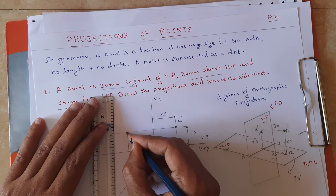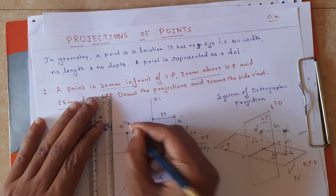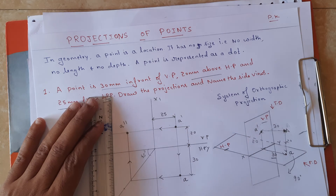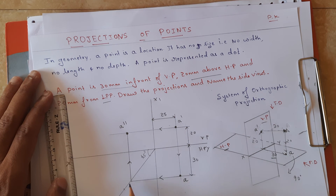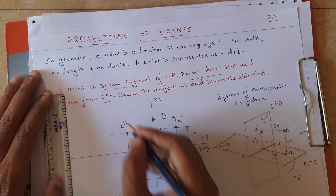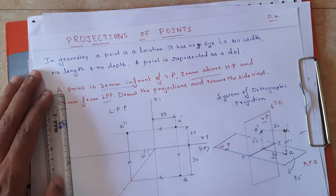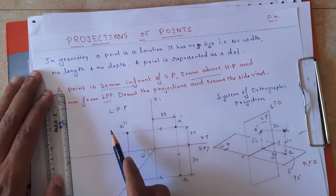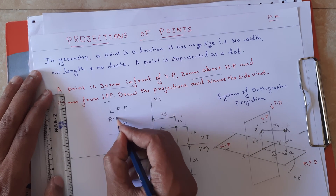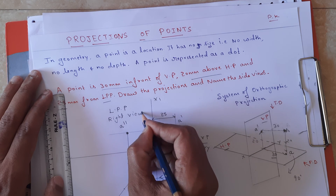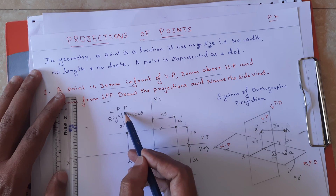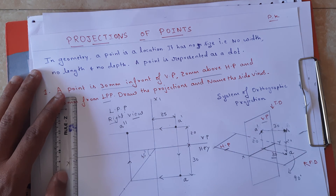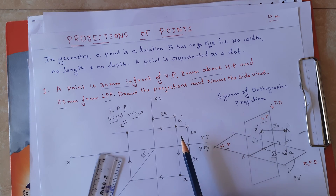So this is the side view of the point, represented as a double dash (a''). Please pay attention to the arrow marks — first I drew the front view, in the same line I drew the top view, then I drew the projections to locate the side view. This is the left profile plane. When an observer looks from the right side, we get that image on the left profile plane — so this is the left profile plane, which is nothing but the right view. This is about problem number one. We will see more problems in the next videos. Thank you, namaste.